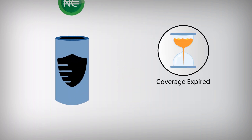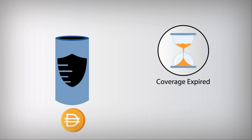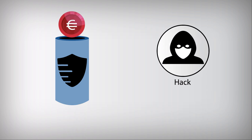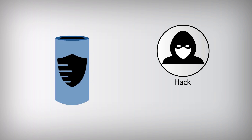If the coverage expired, Bob will only need to return the no-claim tokens to get his DAI back. If a hack, exploit or attack occurred, Bob will only need to return his claim tokens to redeem his collateral of DAI.